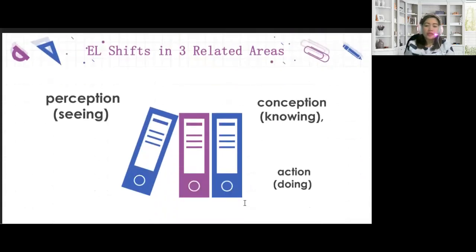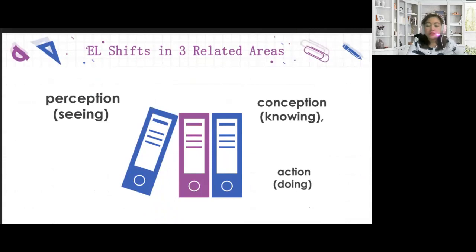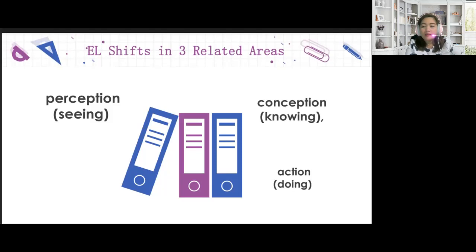Eco-literacy shifts occur in three related areas. Number one is perception — that's what we call seeing, how you perceive and see things. The next one is conception — how you know, how you get it, or how you understand it. And the last one is action — how you do it. Greening initiatives, although challenging and demanding, yield significant benefits in the long run.